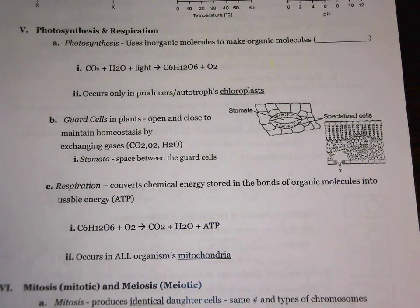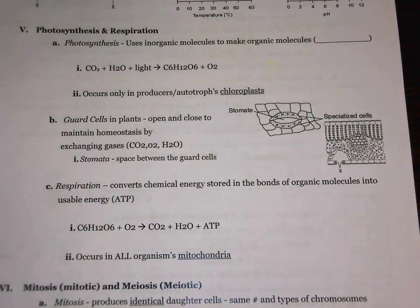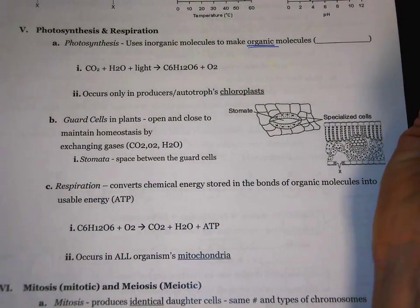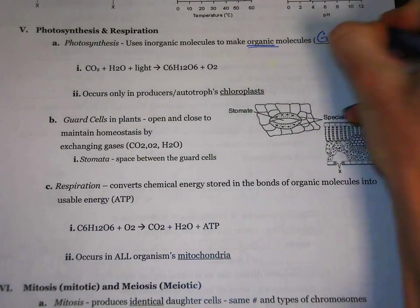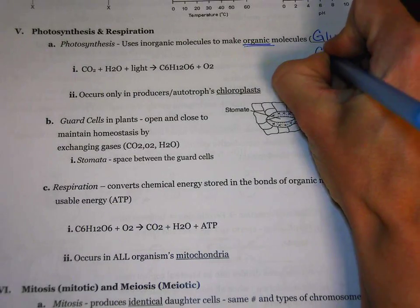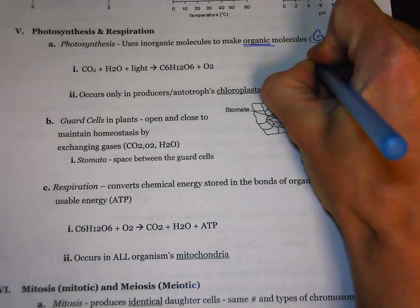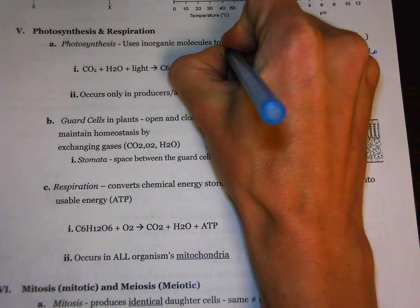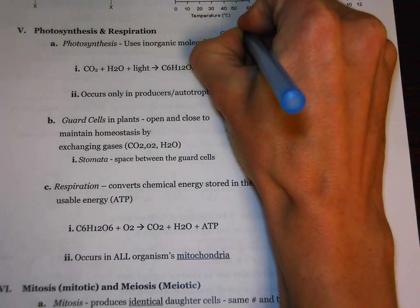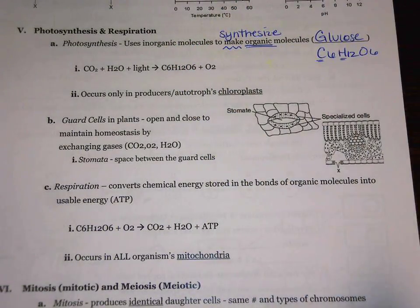First up, photosynthesis. Photosynthesis uses inorganic molecules to make organic molecules — that's going to be how they write it, which can be kind of confusing. So my advice is to make sure that you identify what some of these words mean. Organic molecules — remember, photosynthesis is going to make glucose. The chemical formula for glucose is C6H12O6. It's organic because it has both carbon and hydrogen in there. Another thing to note is that instead of saying 'make,' a lot of times they're going to use the word 'synthesize.' Remember, synthesize is really just a fancy word that means to build or to make.